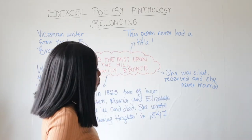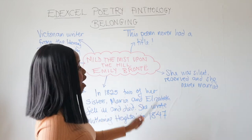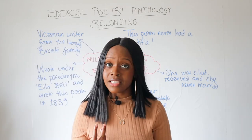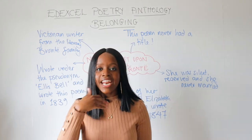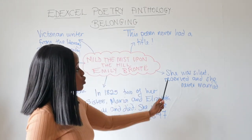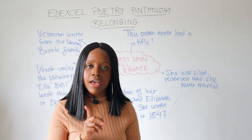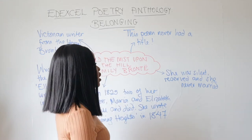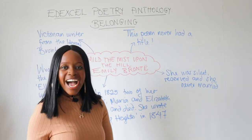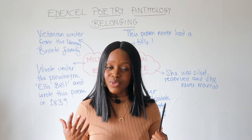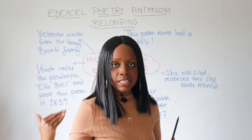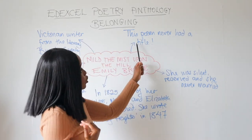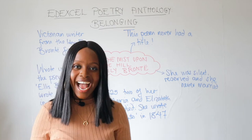Unlike what was expected of women at the time — who were expected to get married and have children — Emily Brontë was very silent and reserved, and she never married, remaining a spinster till the end of her life. Finally, this poem, 'Mild the Mist Upon the Hill', never actually received a title. The name is taken from the first line of the first stanza.